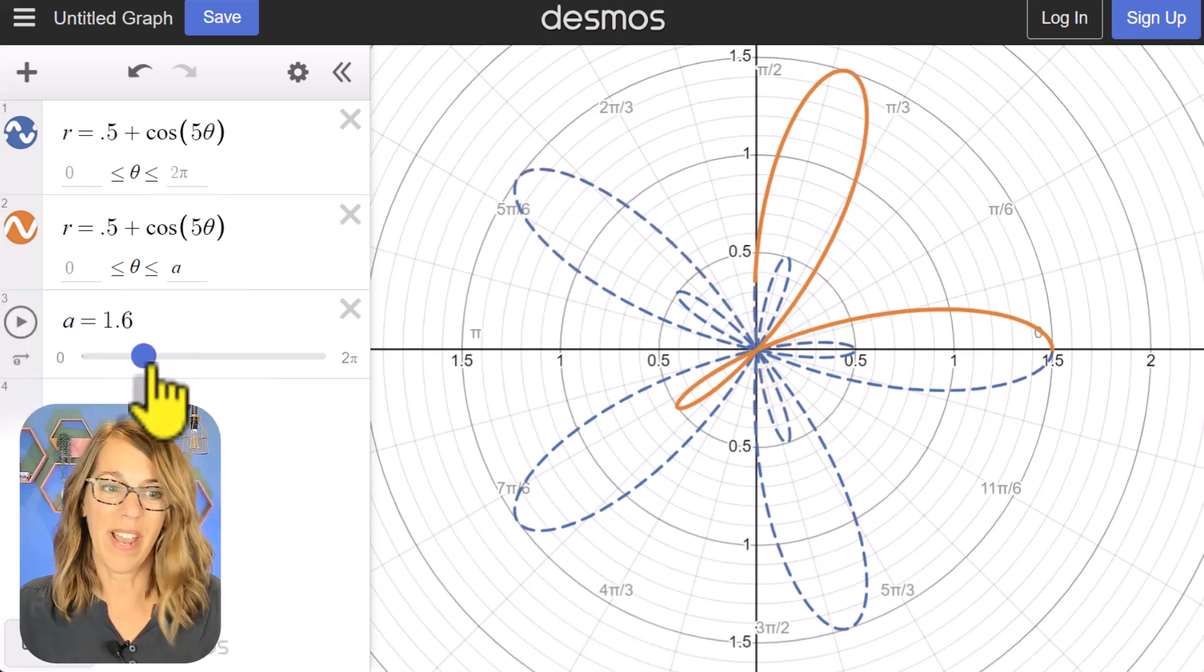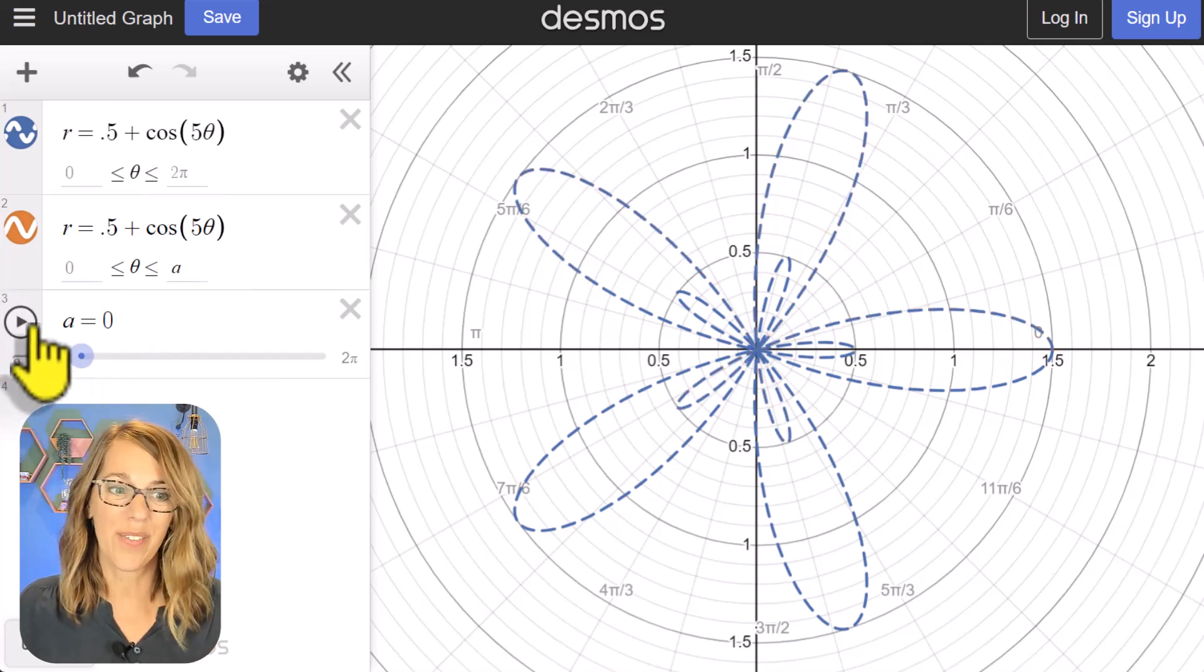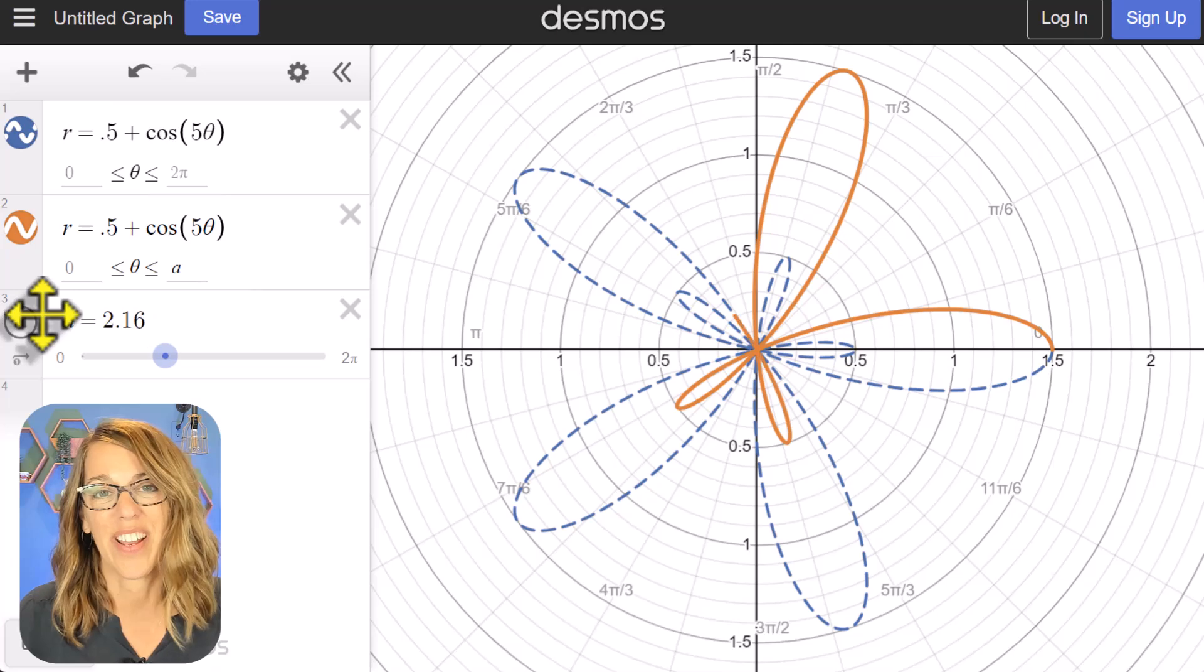Let's hit my animation. Let's go ahead and back the slider up to 0, so we can see exactly where this starts and how it is traced.